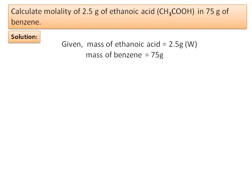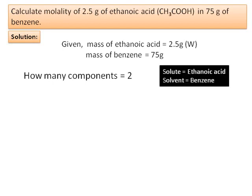Given: mass of ethanoic acid (w) = 2.5 g, mass of benzene = 75 g. There are two components: solute is ethanoic acid (smaller amount, 2.5 g) and solvent is benzene (larger amount, 75 g).